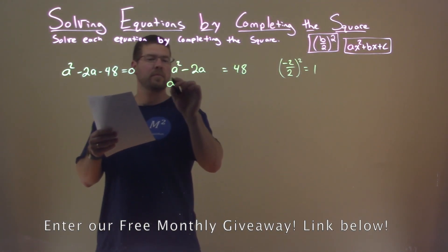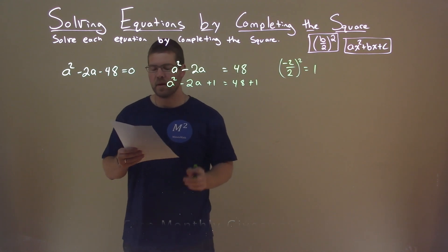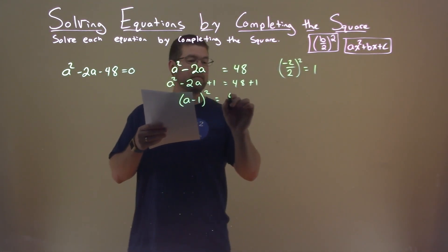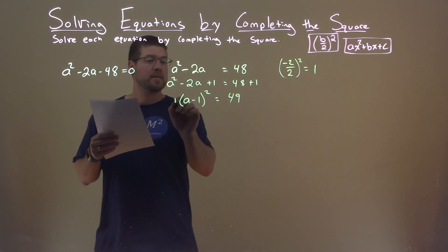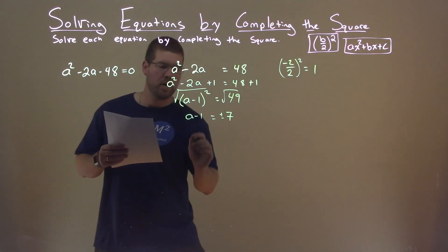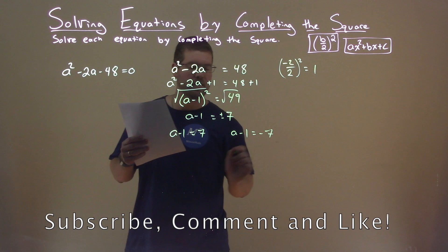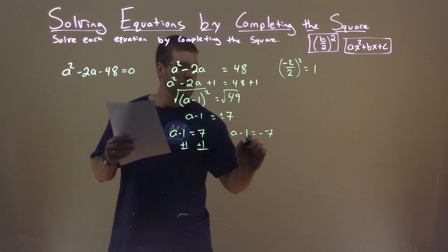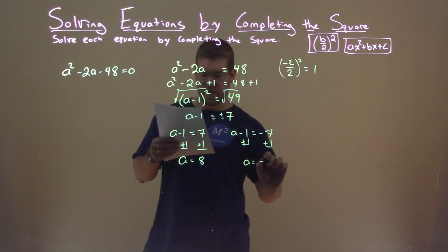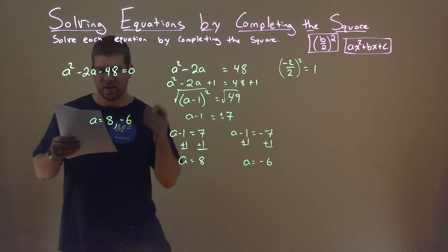The left-hand side is now a perfect square: A minus 1 squared equals 48 plus 1, which is 49. We can take the square root of both sides — A minus 1 equals plus or minus 7. Breaking into two equations: A minus 1 equals positive 7, and A minus 1 equals negative 7. Adding 1 to both sides: A equals positive 8. And adding 1 again: A equals negative 6. My two solutions are A equals 8 and negative 6 — that's our final answer.